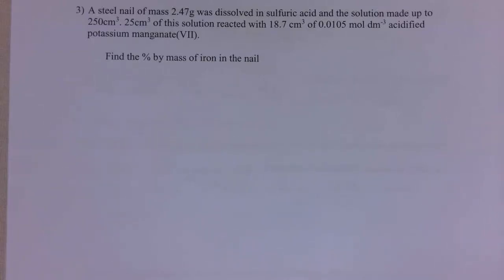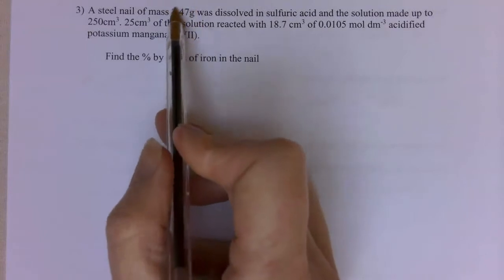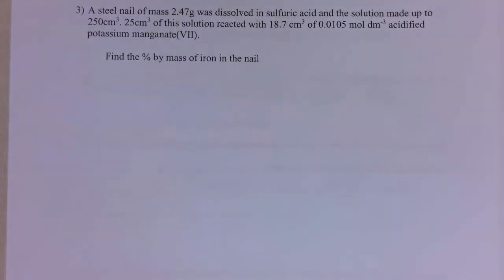The last example is a very typical exam question, where you're given a substance, in this case a steel nail, and you want to find out the percentage by mass of iron in that nail, or sometimes the percentage of purity. The major things to watch on these ones is the dilution effect. Quite often, students forget that bit. But like most calculations, you're going to read this one forwards, but work it backwards.